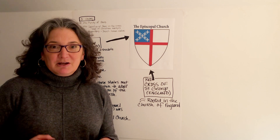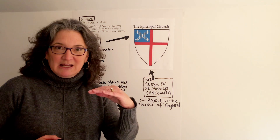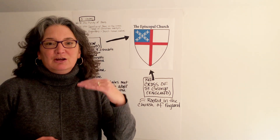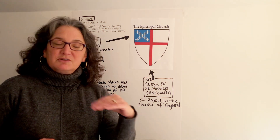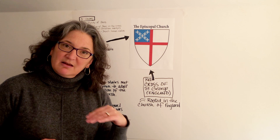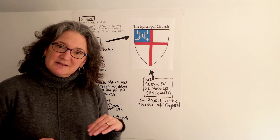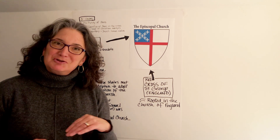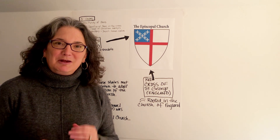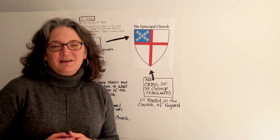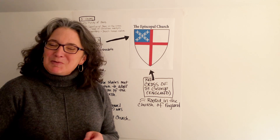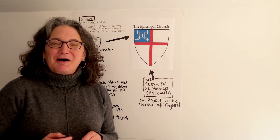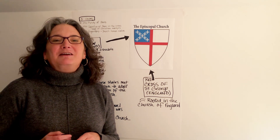The largest church is the Church of Nigeria with over 17.5 million people. After Nigeria comes the United Kingdom, then Uganda, Sudan, Australia, Kenya, and the United States, which comes in at 2.3 million members — a small but important piece of that worldwide communion.